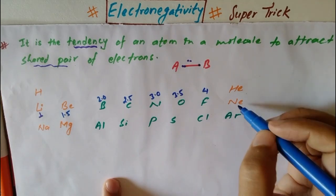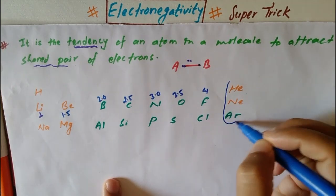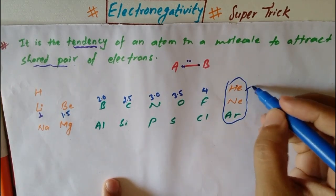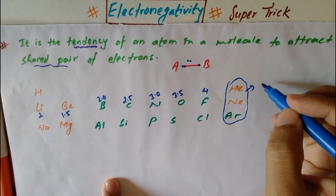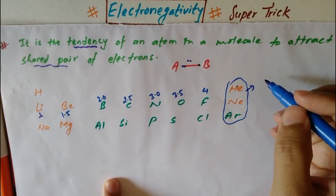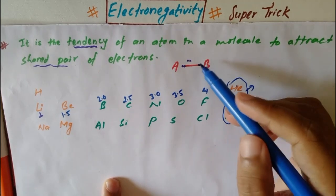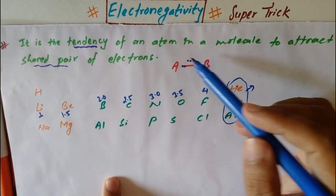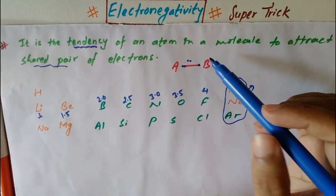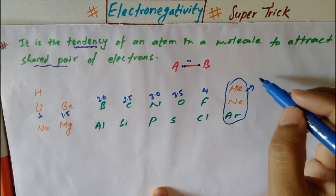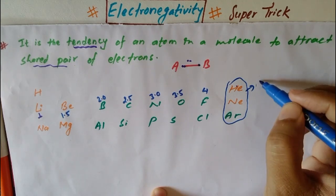Helium, neon, and argon are noble gases — inert gases. Inert gases do not form bonds, so their tendency to attract shared pair of electrons is 0. Therefore, electronegativity of noble gases is 0.